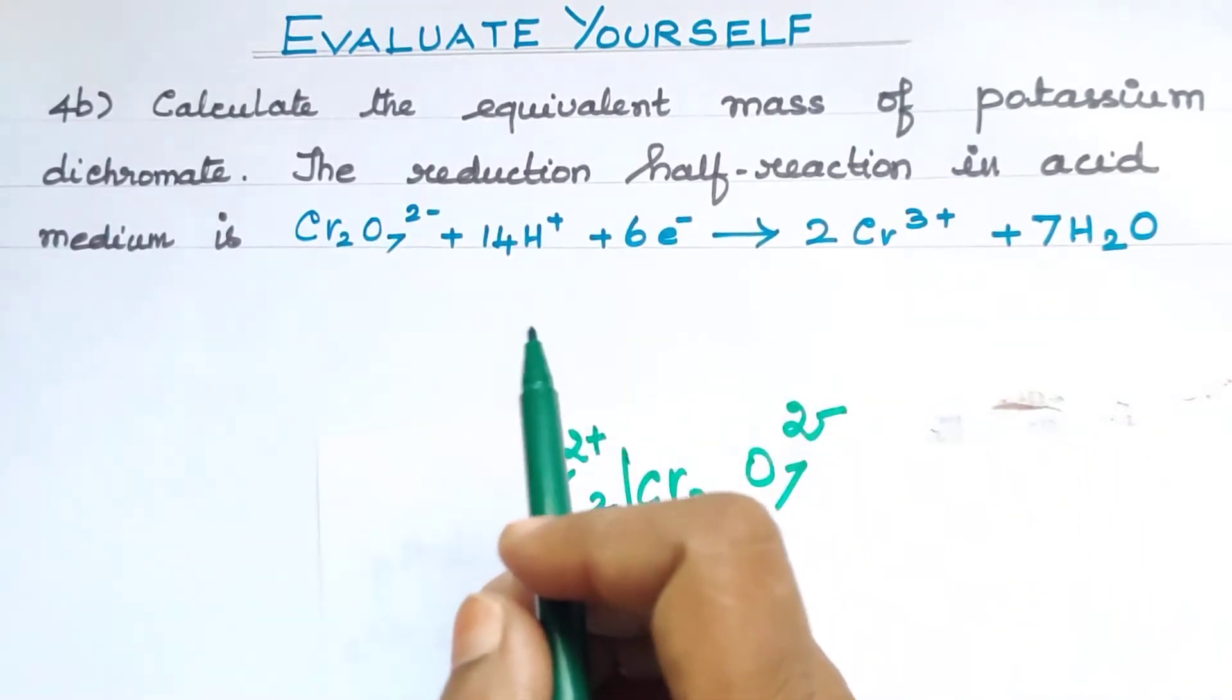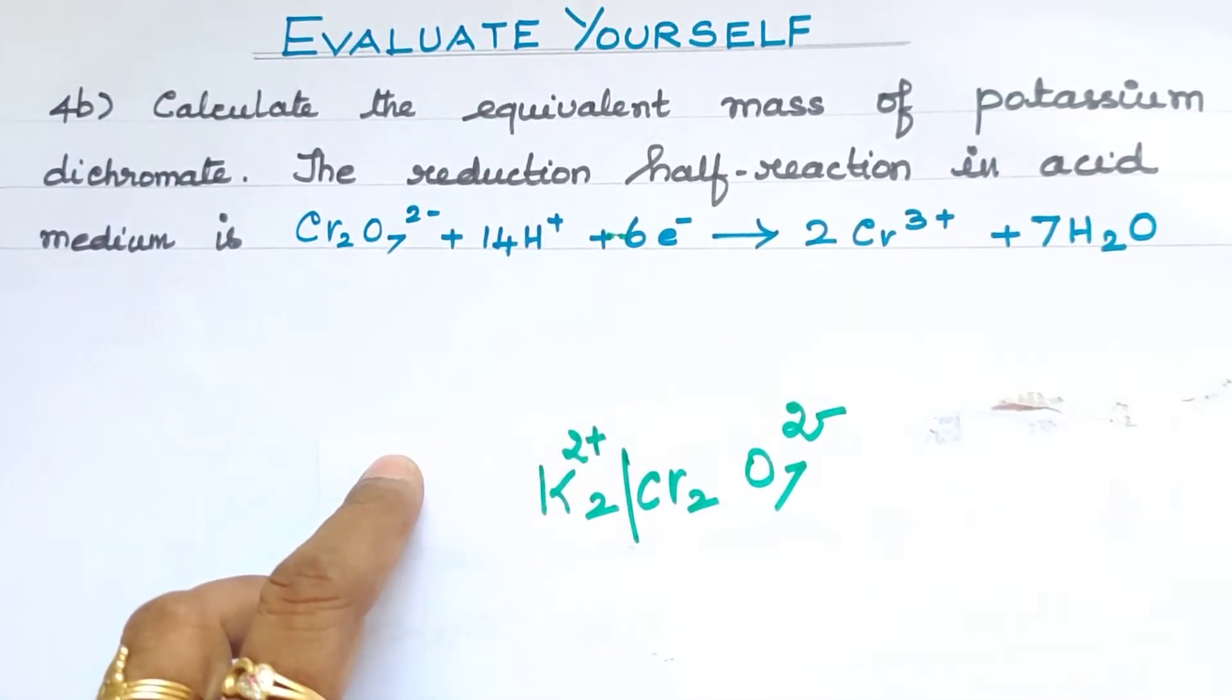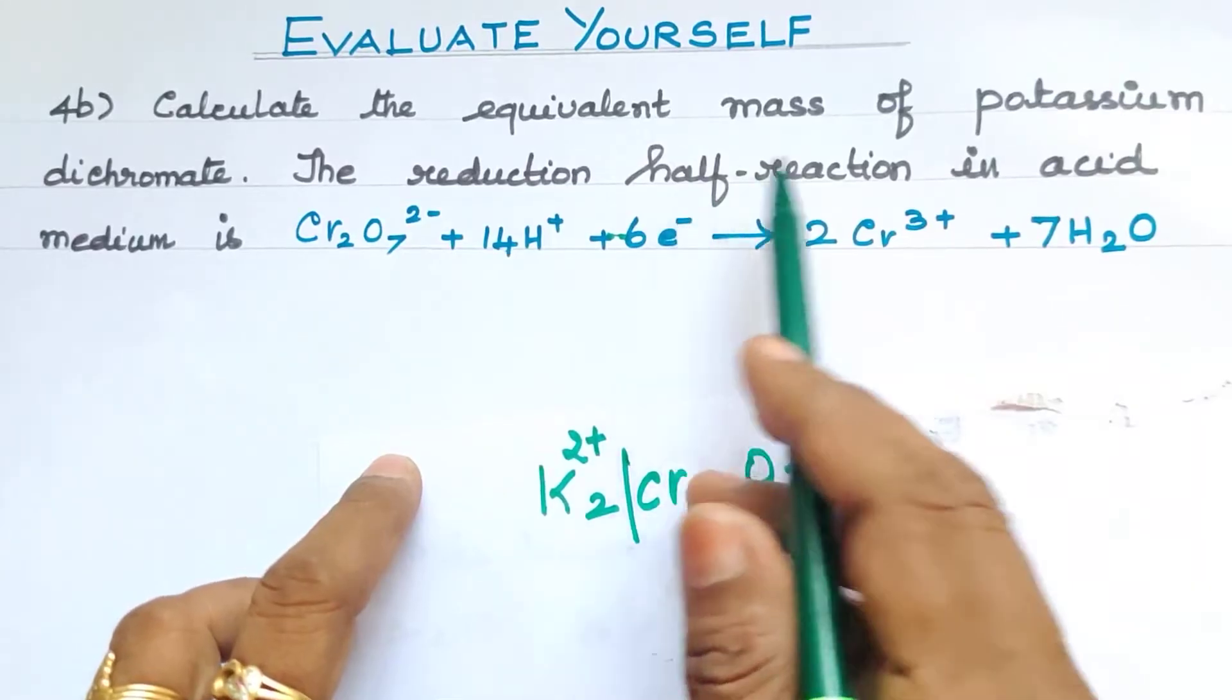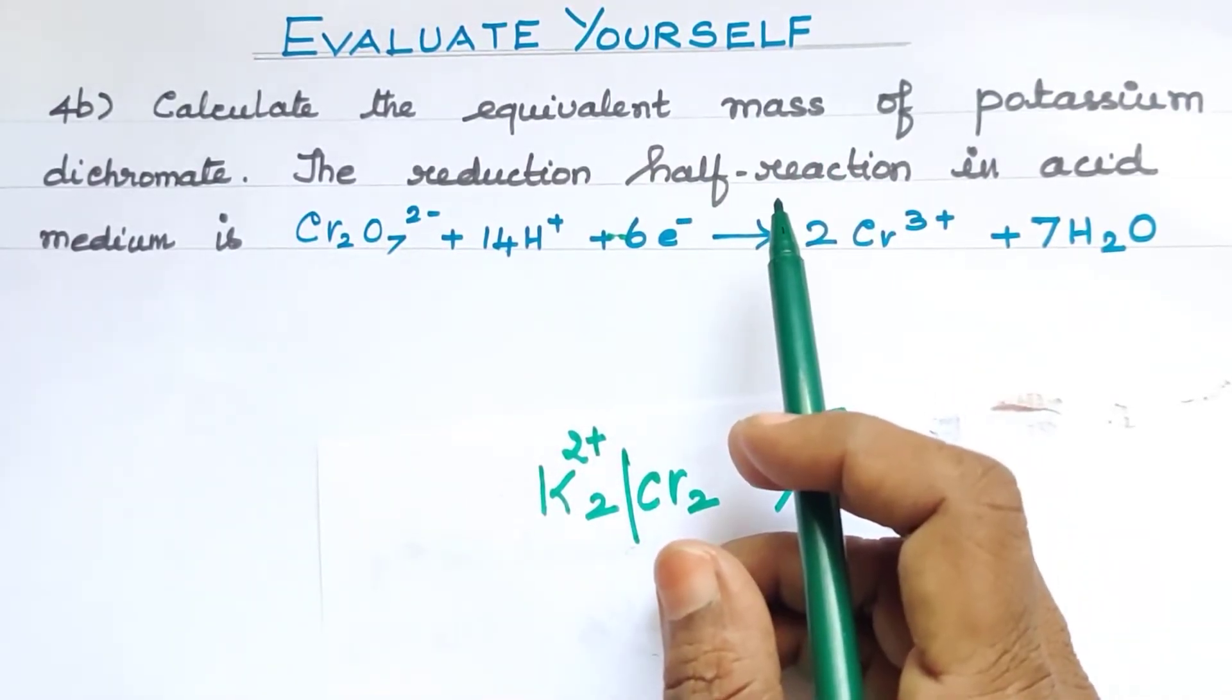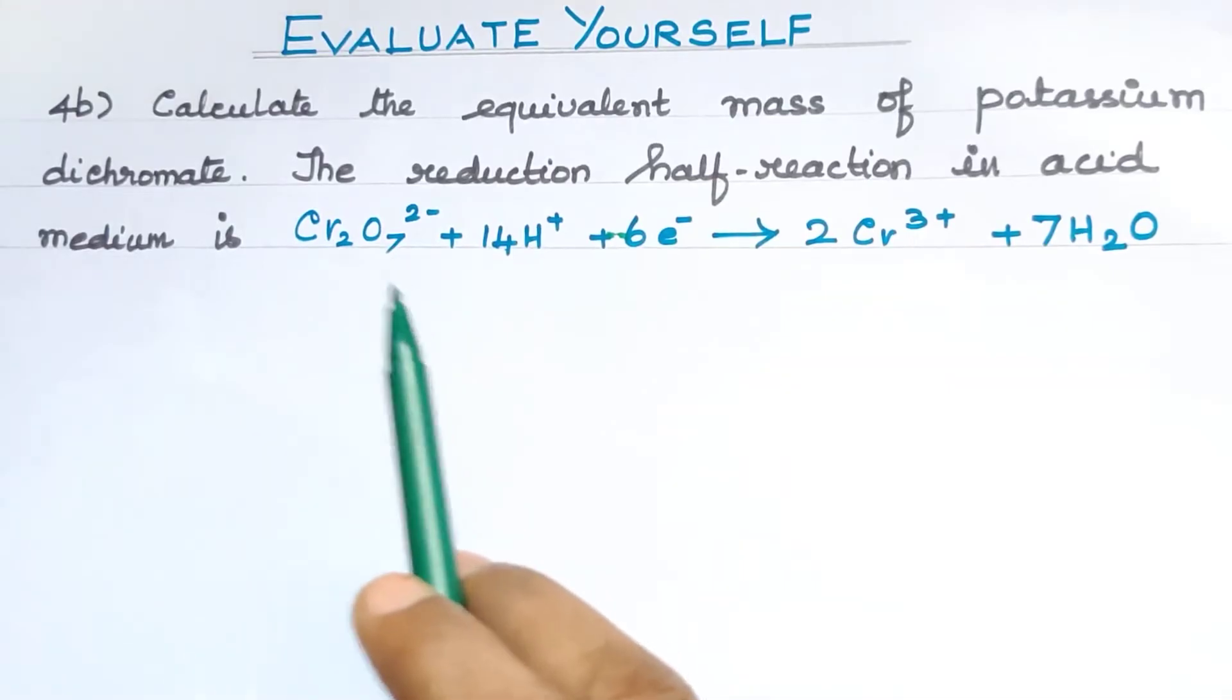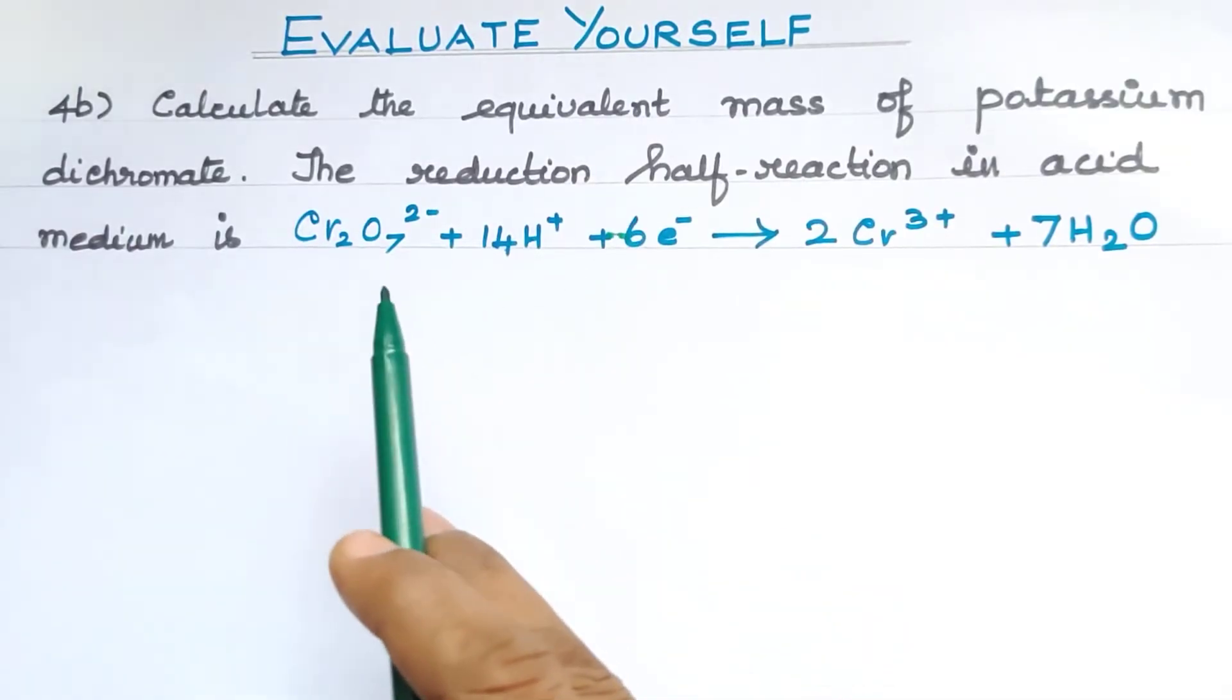Gain of electrons is reduction. When oxidation and reduction occur simultaneously, we call these half reactions. This is a reduction half reaction. The substance that accepts electrons is the oxidizing agent.